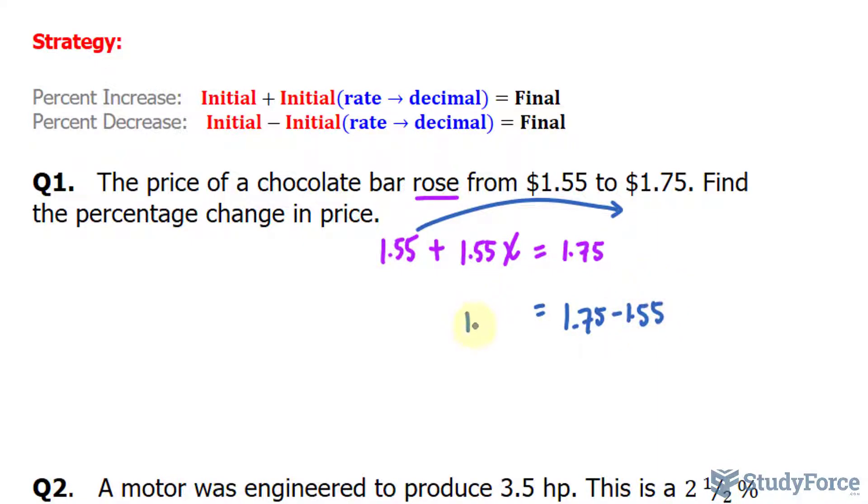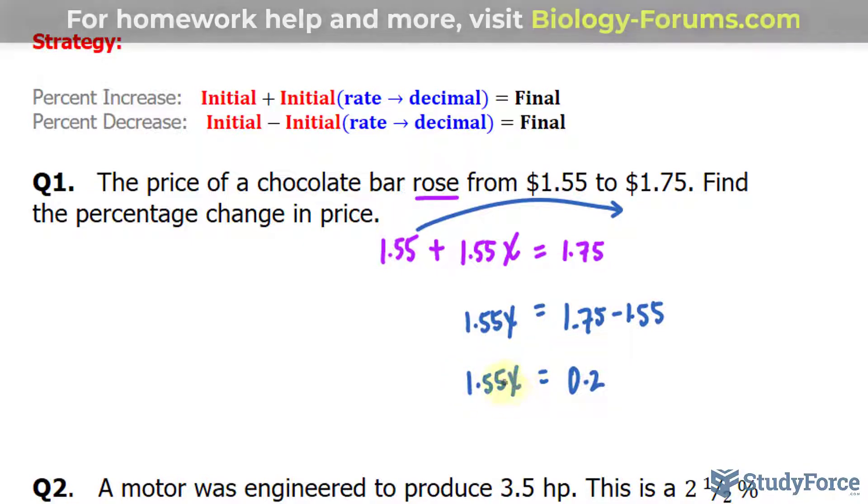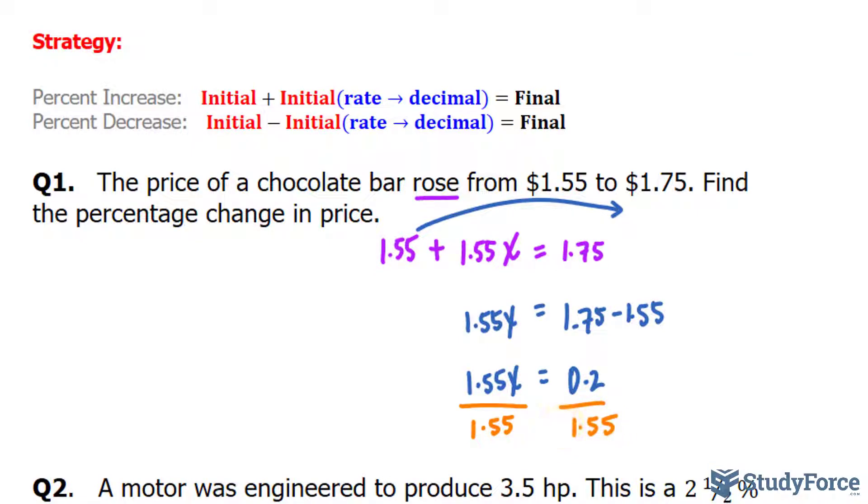And this leaves us with 1.55x on the left side. Subtracting the right side gives us 0.2. And to isolate for x, we will divide both sides by 1.55.